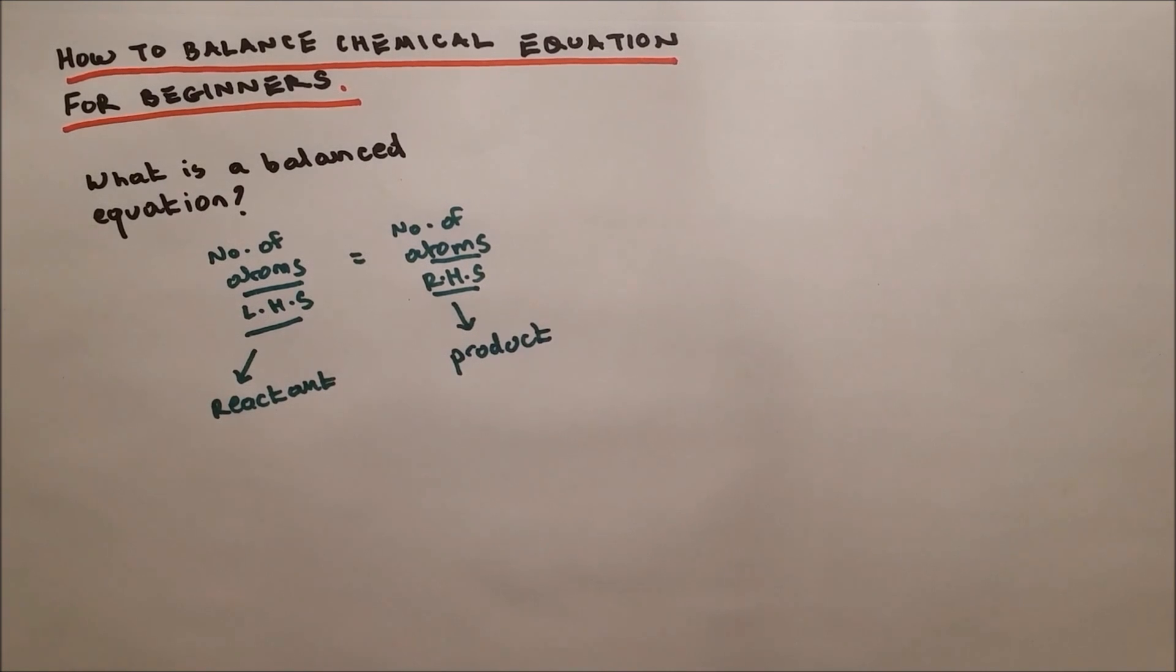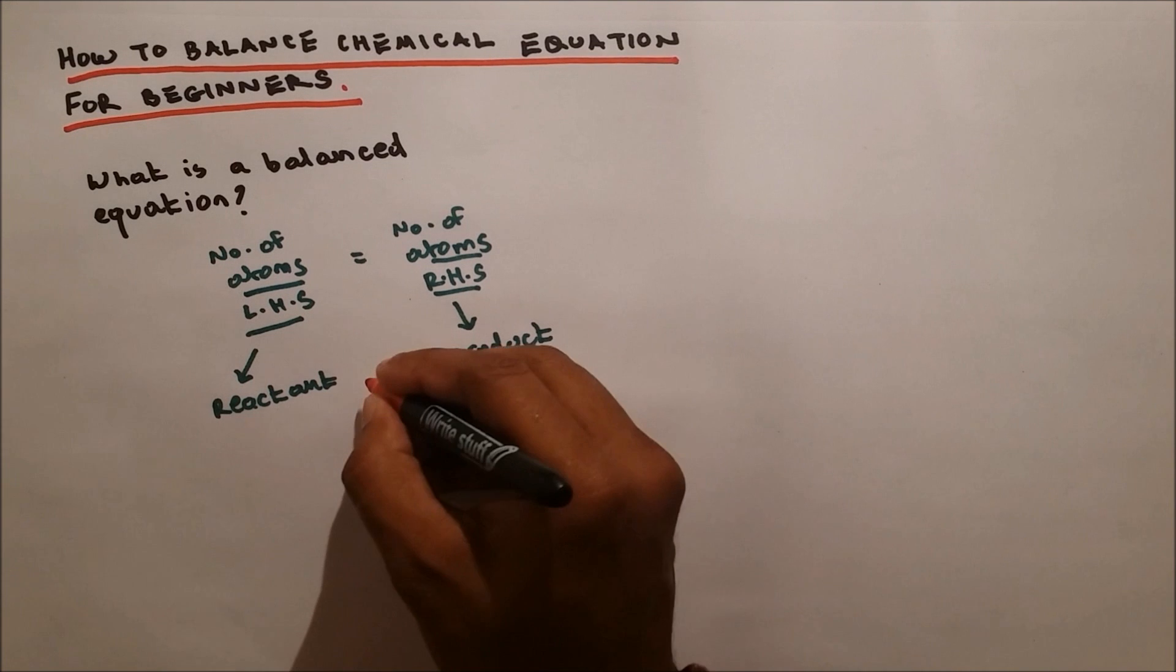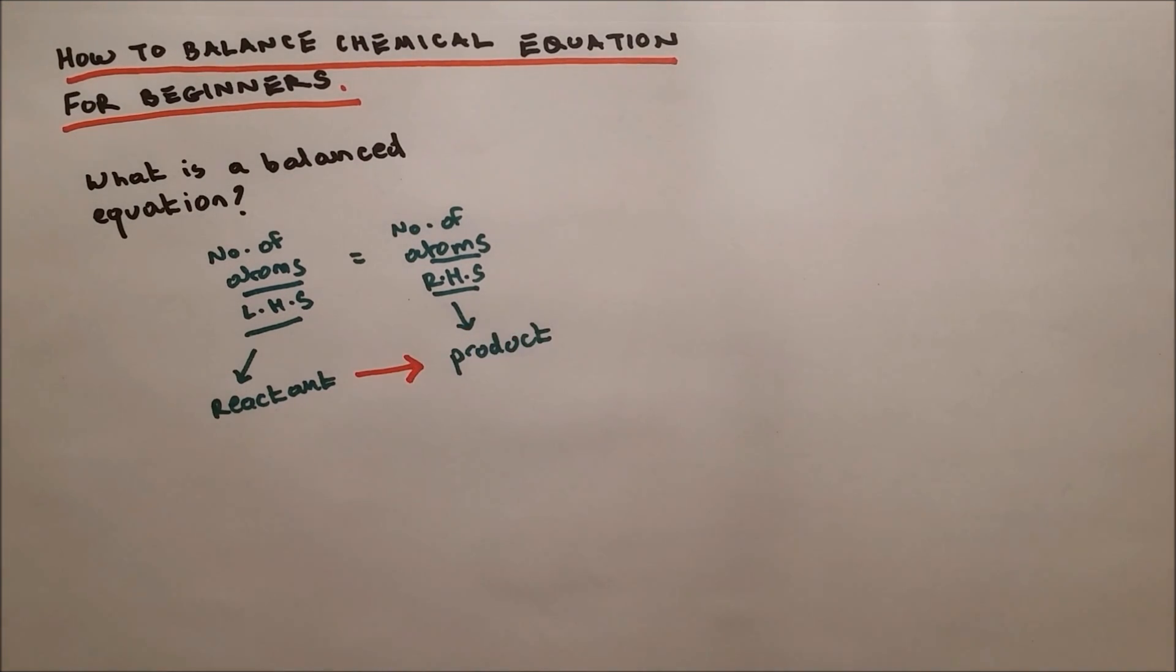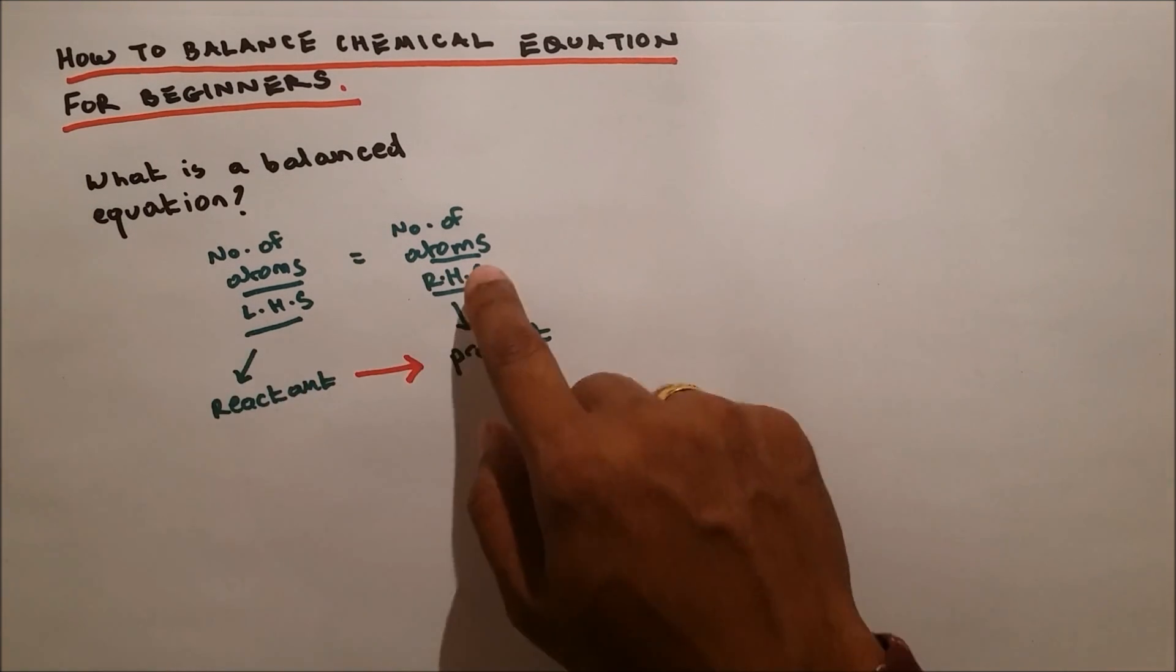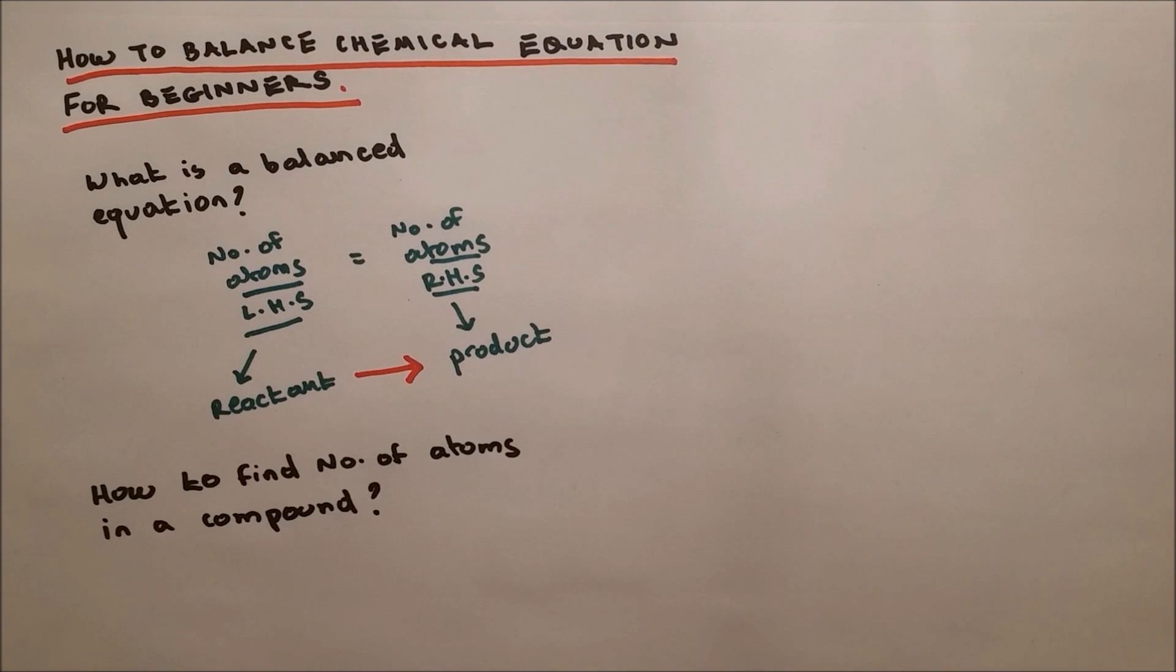When a chemical reaction happens, reactants form into products. In a balanced chemical equation, the number of atoms on the left-hand side must be equal to the number of atoms on the right-hand side.